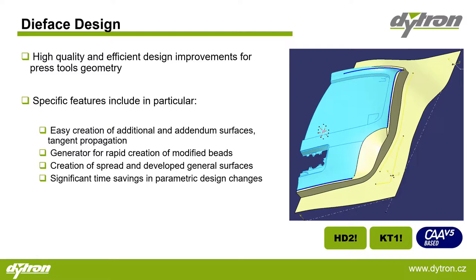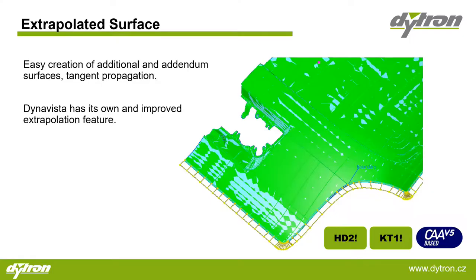It is the tool for necessary geometry changes. Here on the slide we can see the functions and most important features. The basic principle is time saving during your design — easy creation of additional and tandem surfaces with tension propagation, a quick generator for rapid creation of modified beads, and creation of spread and develop general surfaces. We chose to highlight the most interesting representatives: extrapolated surface, flange line calculation, and creation of a bead surface.